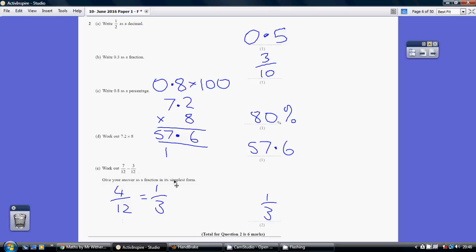It does ask for the answer in its simplest form, so you've got to cancel this down. You've got to divide top and bottom by 4 to get to 1 over 3, a third.